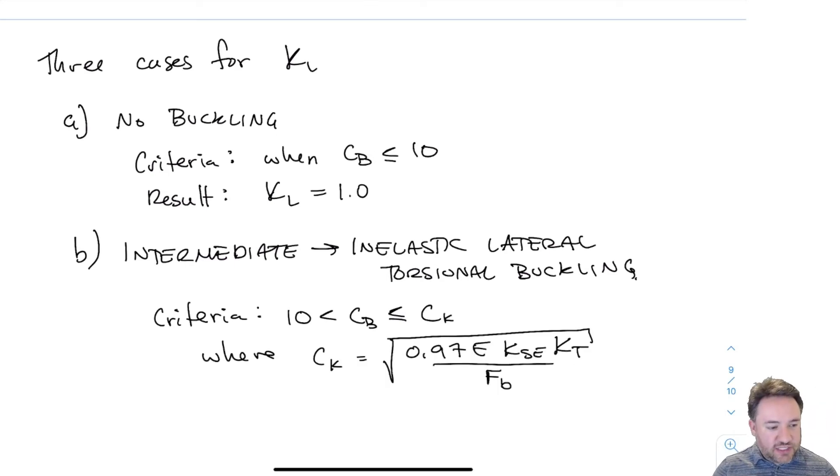This is the part with medium slenderness where we have a combination of lateral torsional buckling and member section failure together. This is inelastic lateral torsional buckling. If this occurs and I let go of the load, there will still be residual deformation in the beam—it won't spring right back.